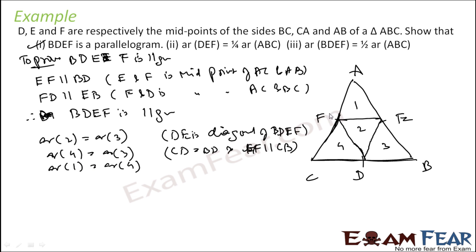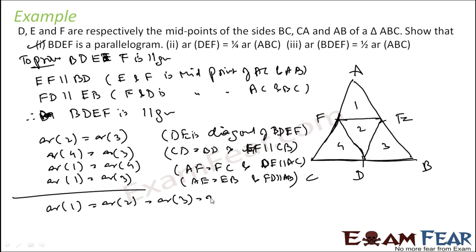Similarly, area of 1 is equal to area of 2. Because AF is equal to FB and they are on the same parallel lines. Similarly, 1 is equal to 3 because AE is equal to EC. With all these, I can say that area of 1 is equal to area of 2 is equal to area of 3 is equal to area of 4. One is equal to three, one is equal to four, two is equal to three, everything.